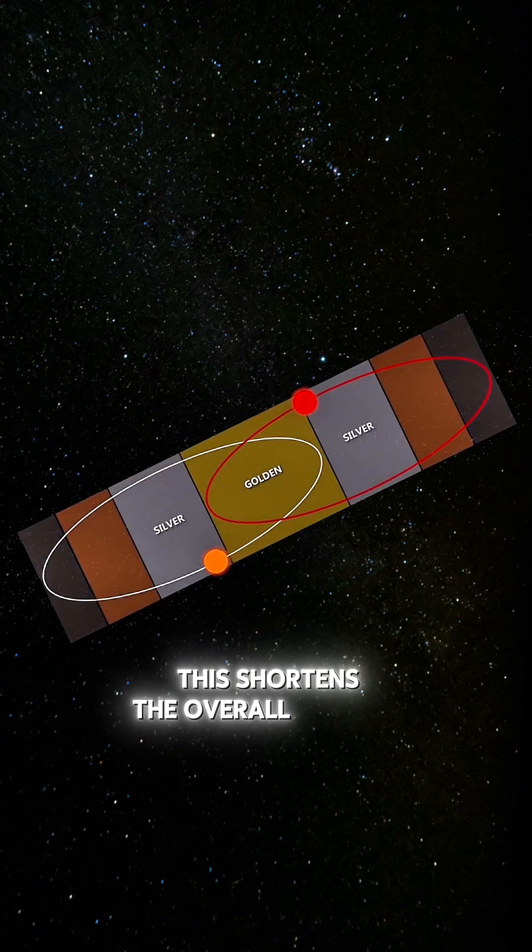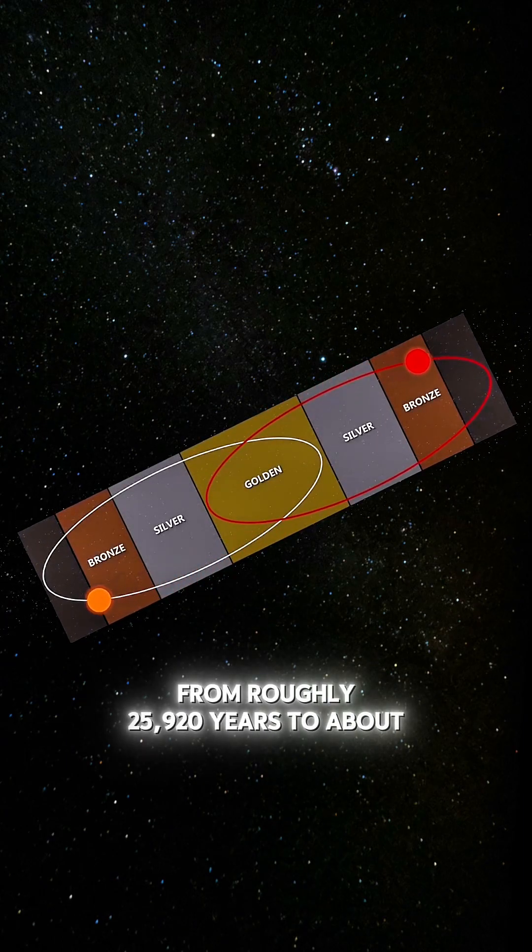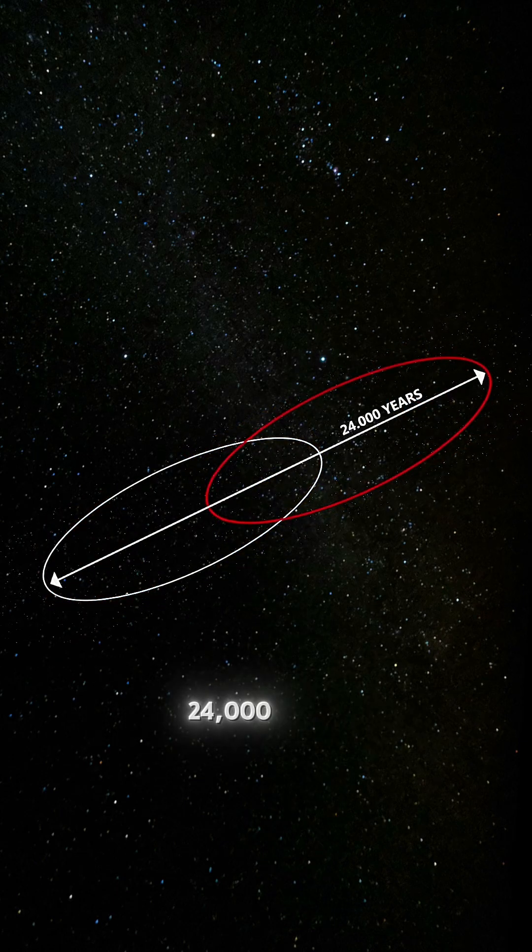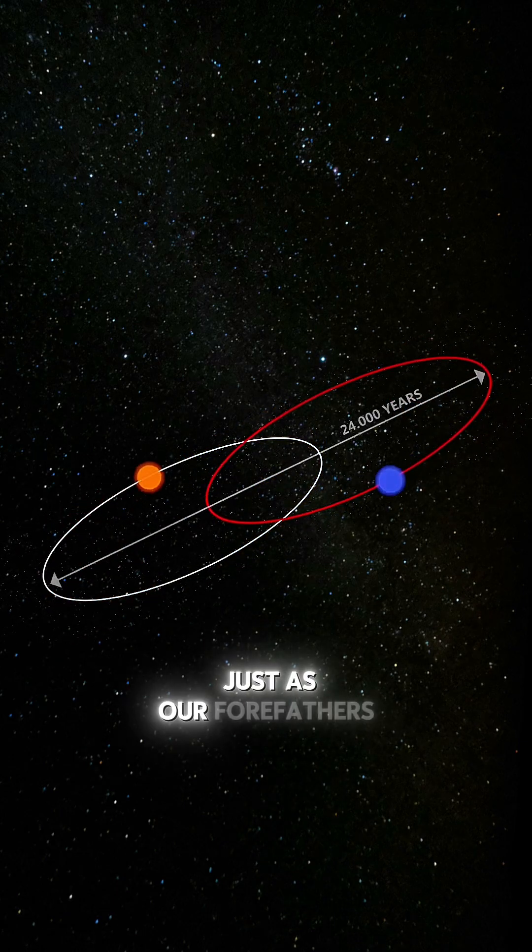This shortens the overall orbital period from roughly 25,920 years to about 24,000 years, just as our forefathers described.